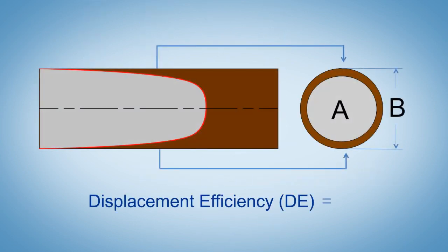Displacement efficiency is defined as the fraction of the cross-sectional area occupied by the displacing fluid.